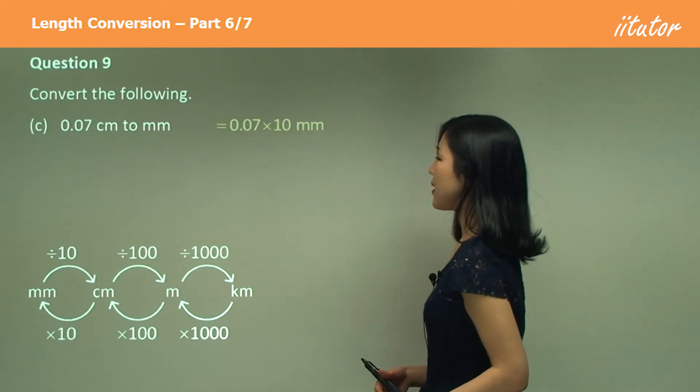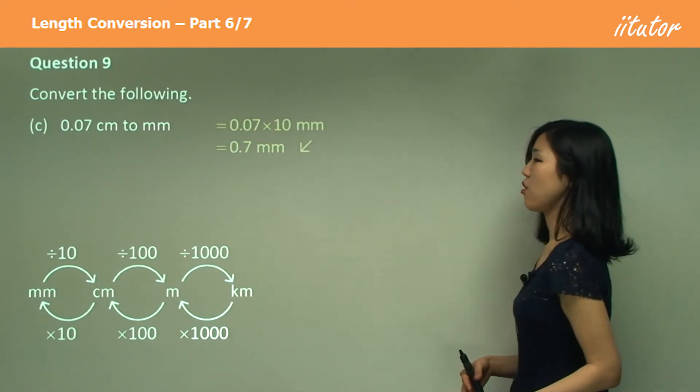Okay, centimeters to millimeters, multiplied by 10, move the decimal to the right, getting 0.7.